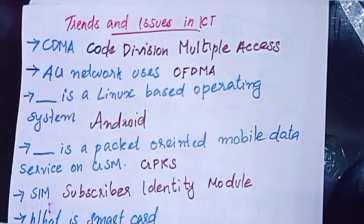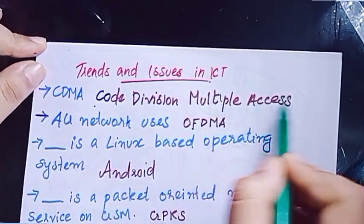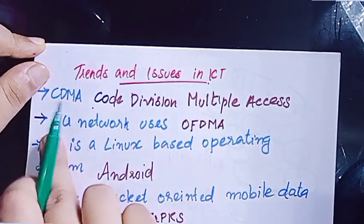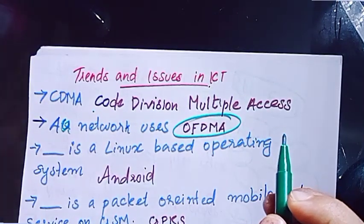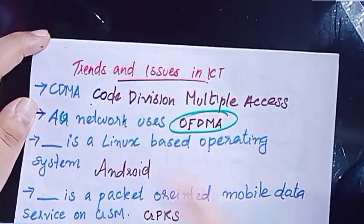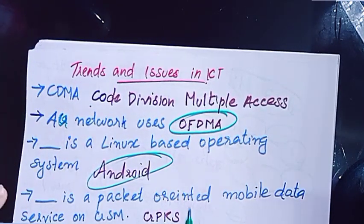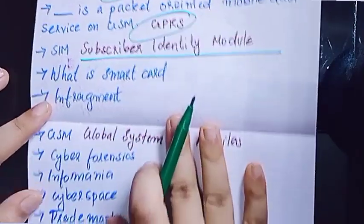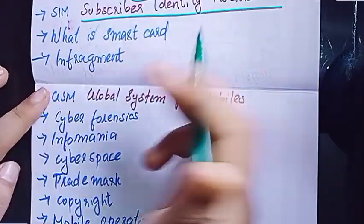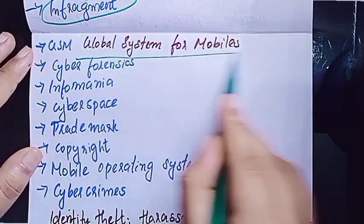Next is the last chapter — Trends and Issues in ICT. CDMA — Code Division Multiple Access. 4G network uses OFDM. Linux-based operating system. Android. Packet-oriented mobile system. GPRS. SIM — Subscriber Identity Module. What is a smart card? Smart card has a small explanation. GSM — Global System for Mobiles. Look at the full forms.